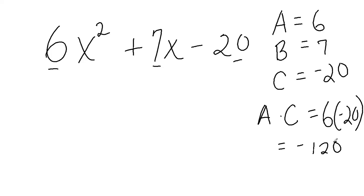Now since AC is negative, we're going to have to have one positive number and one negative number in order for it to multiply to negative. And remember what we're looking for, we're looking for the factors of AC that add up to B, which is 7.